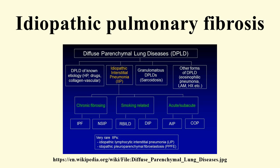An earlier diagnosis of IPF is a prerequisite for earlier treatment and, potentially, improvement of the long-term clinical outcome of this progressive and ultimately fatal disease. If IPF is suspected, diagnosis can be challenging, but a multidisciplinary approach involving a pulmonologist, radiologist, and pathologist expert in interstitial lung disease has been shown to improve the accuracy of IPF diagnosis. A multidisciplinary consensus statement on idiopathic interstitial pneumonias published by the American Thoracic Society and European Respiratory Society in 2000 proposed specific major and minor criteria for establishing the diagnosis of IPF.